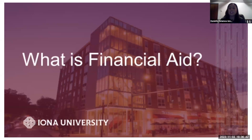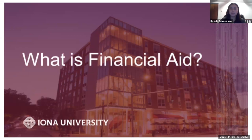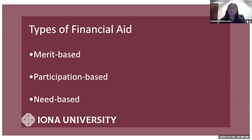So the first thing is, what is financial aid? Financial aid is the assistance that you need financially — the resources you would use to assist your overall costs for your college education. When we talk about financial aid, we're going to go over certain terms: the first being merit-based, the second being participation-based, and the third being need-based. I'll define these three topics in more detail as we go along.